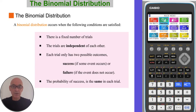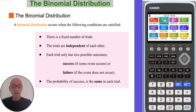A binomial distribution occurs when the following conditions are satisfied: there are a fixed number of trials, the trials are independent of each other, the probability of success is the same in each trial, and each trial only has two possible outcomes — success or failure.